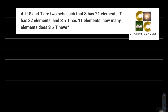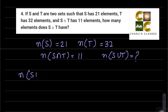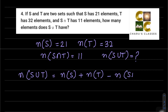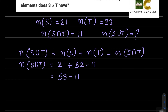Question number 4: If S and T are two sets such that S has 21 elements, so n(S) = 21; T has 32 elements, so n(T) = 32; and S∩T has 11 elements, so n(S∩T) = 11 — how many elements does S∪T have? Using the formula: n(S∪T) = n(S) + n(T) - n(S∩T) = 21 + 32 - 11 = 53 - 11 = 42.